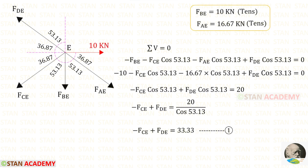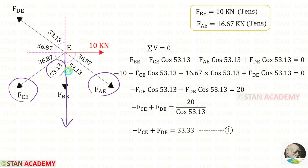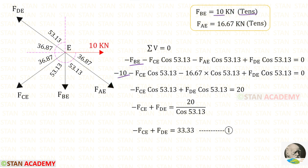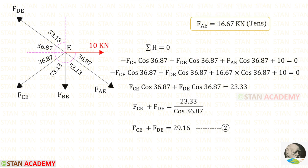Now let us take joint E. First let us apply sigma V = 0. FBE is acting downwards, so it will be negative. FCE and FAE are inclined; to make them vertical we need 53.13°. Both are acting downwards, so both will be negative, multiplied with cos 53.13°. FDE is also inclined; to make it vertical we need 53.13°. It is acting upwards, so it will be positive, multiplied with cos 53.13°. We know FBE = 10 and it is tensile, and FAE is also tensile. After simplifying, we will get equation number one.